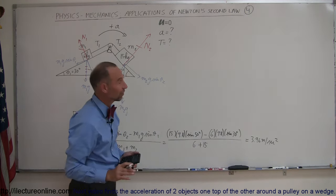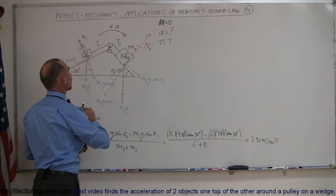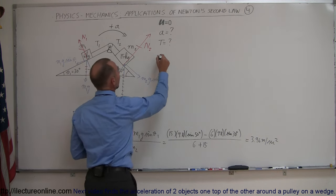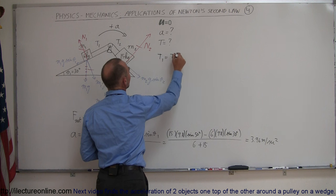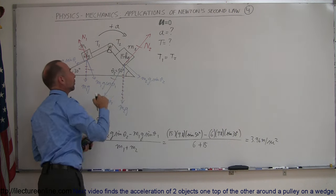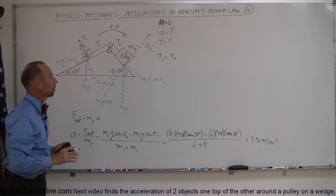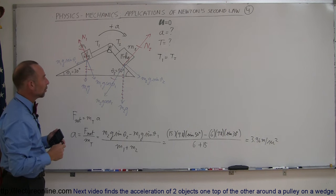All right so now we found the acceleration. Now we need to find the tension in these strings, and we should already know that t1 equals t2 assuming that there's no friction in the pulley and we assume no mass in the pulley so we don't have to worry about its moment of inertia.